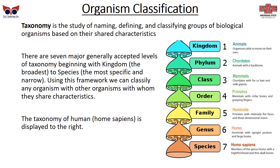With so many organisms, we need a way to classify them — that process is called taxonomy, the study of naming, defining, and classifying groups of biological organisms based on shared characteristics. There are seven major accepted levels of taxonomy, beginning with kingdom — the broadest — running down to species: kingdom, phylum, class, order, family, genus, species. Using this framework, we can classify any organism with others that share characteristics. The taxonomy of a human, for example, is the animal kingdom, chordate phylum, mammal class, primate order, hominid family, homo genus, and homo sapiens as our species.